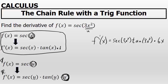Which in this case is 6x. I'll write my final answer with the 6x in front of secant 3x squared times tangent 3x squared.